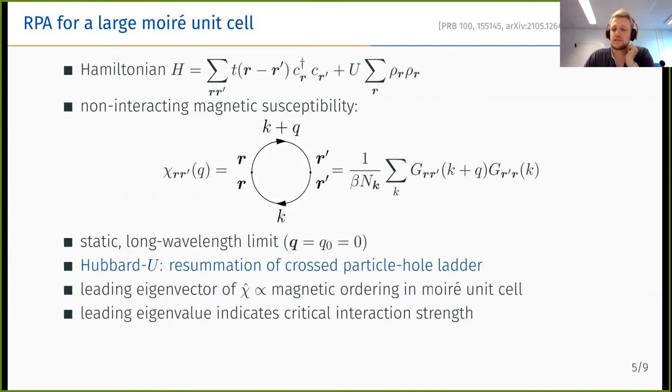Let's start with the simplest approximation, which is the random phase approximation, and using that for a large moiré unit cell. We start with the Hamiltonian given in the top equation here, and we directly see that there is the non-interacting part of the Hamiltonian which leads to the flat band dispersion of the moiré system, and then there's the interacting part of the Hamiltonian, which is in this case just the density-density interaction, and even just a Hubbard interaction. We can approximate the effect of the Hamiltonian by calculating the non-interacting susceptibility.